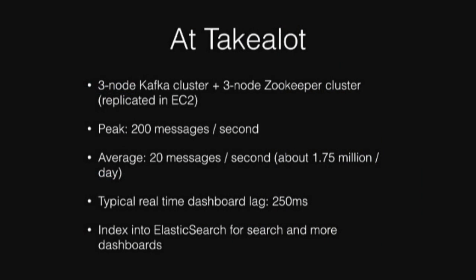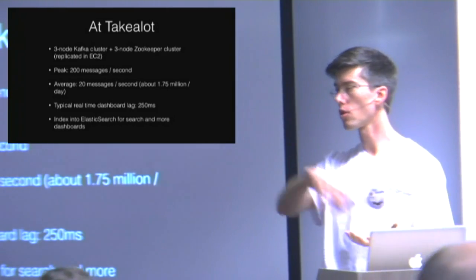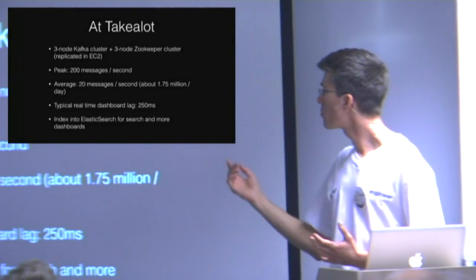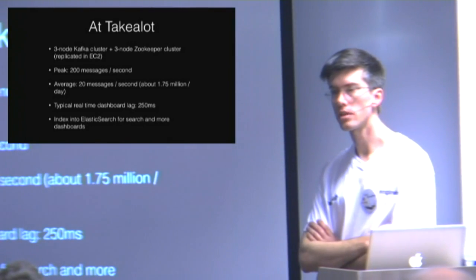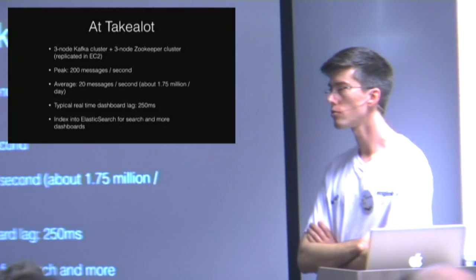Just to give you some idea of what we run: we have a three-node Kafka cluster and a three-node Zookeeper. Zookeeper is a way of sharing global state between different services — the three Kafka brokers need to coordinate with each other and Zookeeper does that coordination. We have that running in a data center, replicated in EC2, and we replicate some logs to EC2 for ingesting into Hadoop. At peak we do about 200 messages a second; average is about a factor of 10 less, resulting in about 1.75 million a day. That's not bad for a fairly straightforward three-node Kafka cluster.